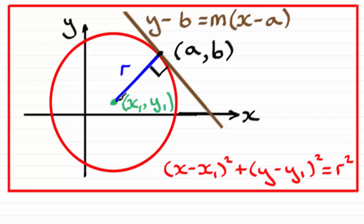And we can work out the gradient of this line, and use the perpendicular gradient rule to get the gradient of the tangent. Remember, that is minus the reciprocal of this gradient. So that's basically the method that we're going to use.